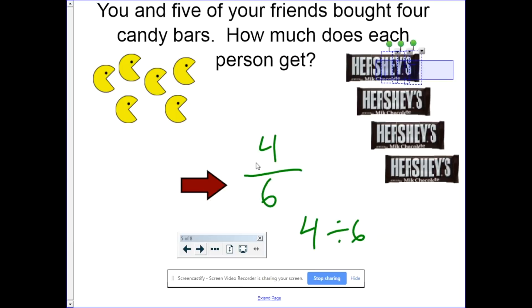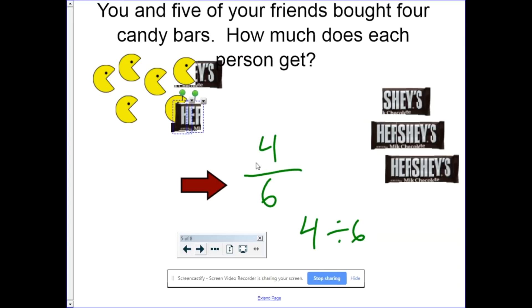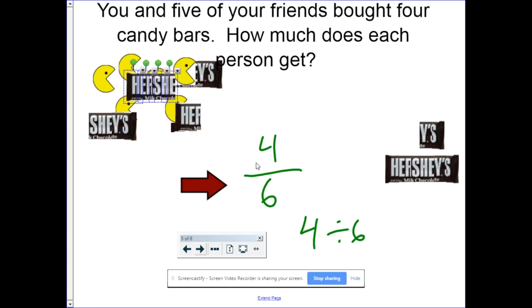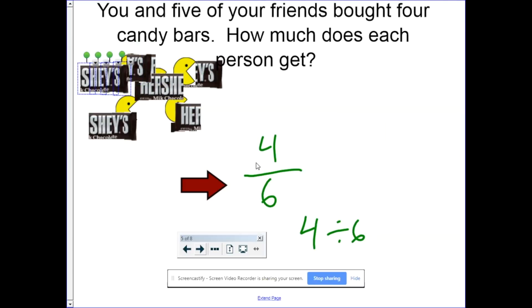So we have four-sixths for the first person. One, two, three-fourths. That's four-sixths for that person. Four-sixths for that person. Four-sixths for this person. One, two, three-fourths. So four-sixths for that person. And finally, four-sixths for the last person. So, it works. Fractions are division. The fraction bar means divide!